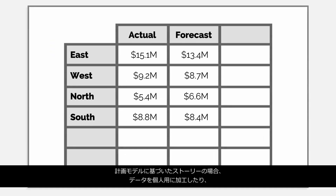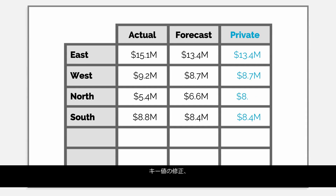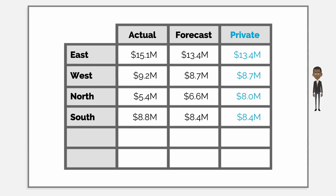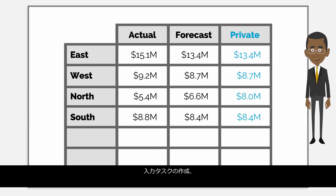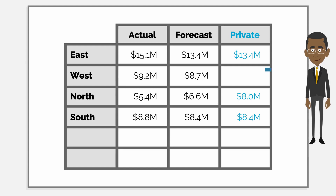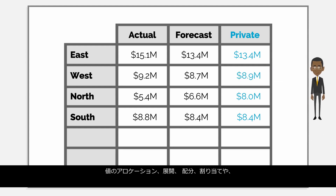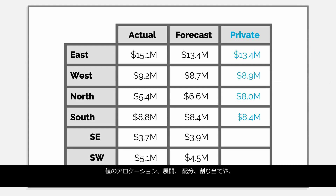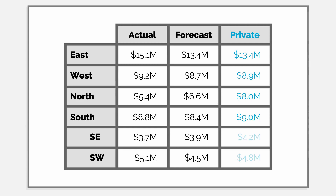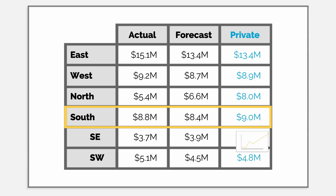For stories based on planning models, you can also create private versions of your data, modify key values, create input tasks, allocate, spread, distribute, and assign values, and predict future trends.